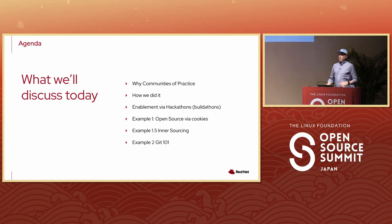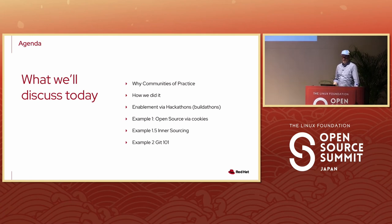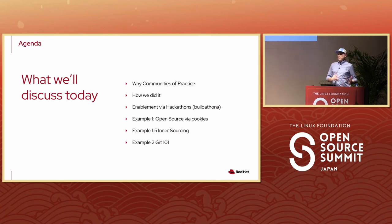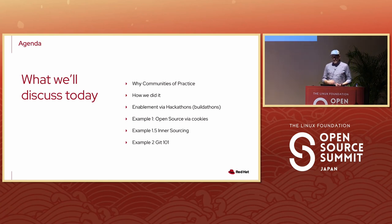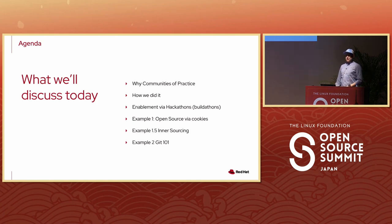Here's a quick agenda: why you actually want to build a community of practice, how we did it, how we did enablement via hackathons and bill-a-thons, how we showed examples — so instead of just telling you about things, I want to show you some of the things we ran our customers through. How open source works — and I like to talk about it via cookies, because who doesn't like cookies? Then talking about inner sourcing, and finally Git 101, because a lot of people don't actually know how to use Git.